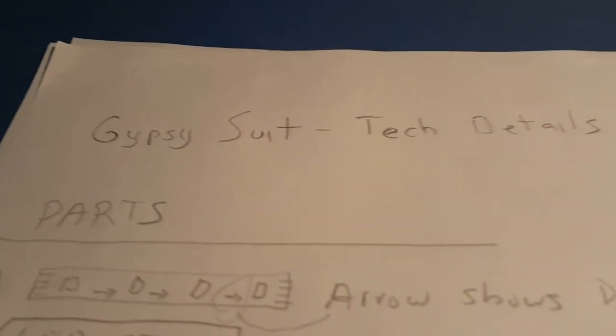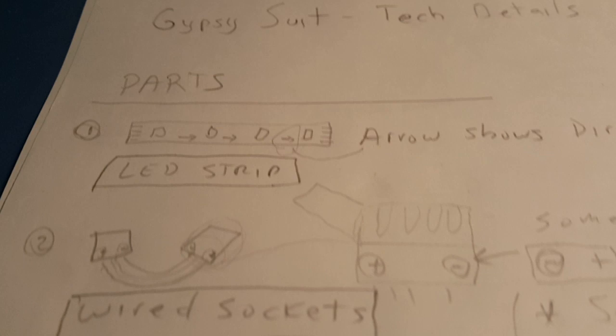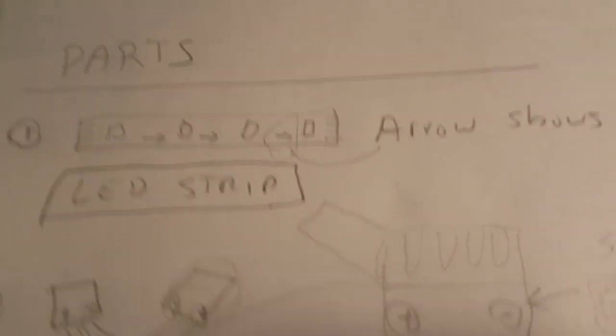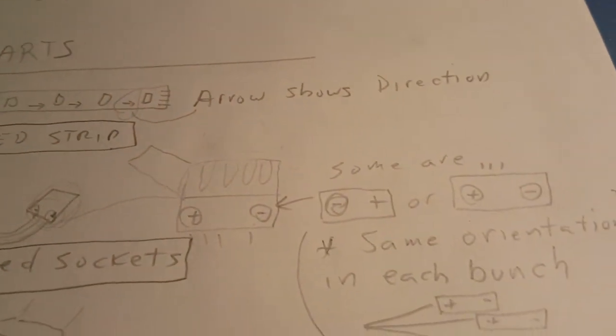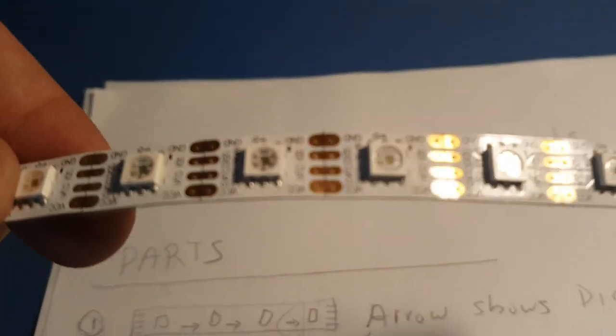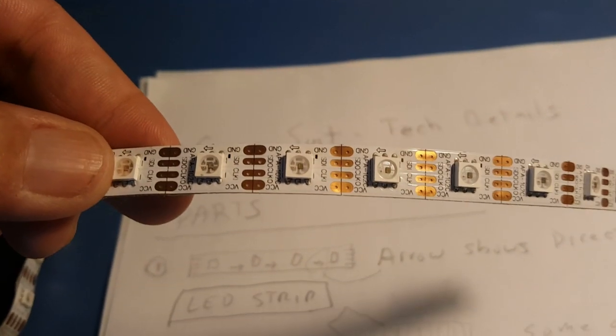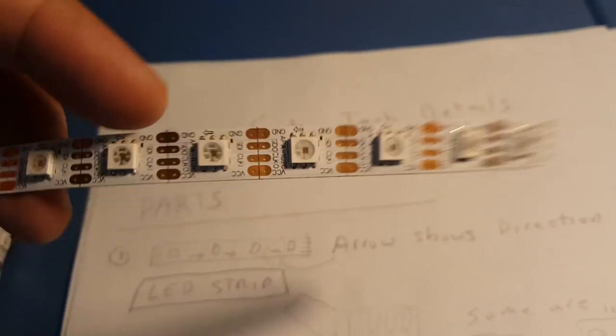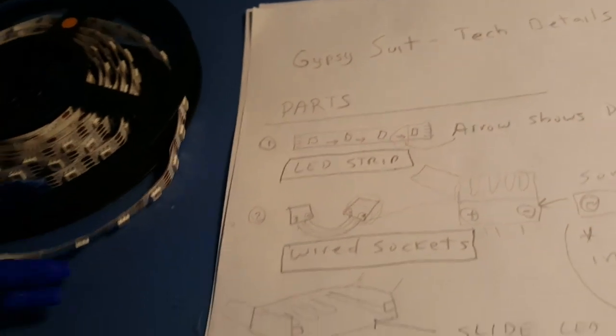In this video we're going to go over the Gypsy Suit technical details. We'll look at the parts. Here we have the LED strip. It has an arrow on it that shows you what direction you're supposed to put it in, a little arrow right there at the top.